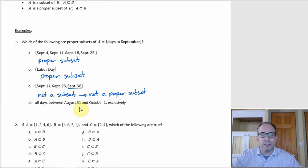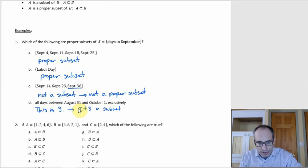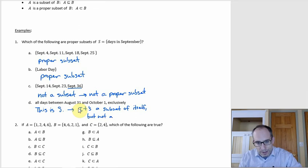Option D is all days between August 31st and October 1st exclusively — meaning you don't include those endpoints, just everything in between. That would be September 1st through September 30th, which is all of September. So this set is just S itself — it's a subset of itself, but not a proper subset.